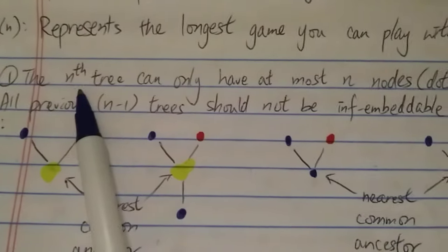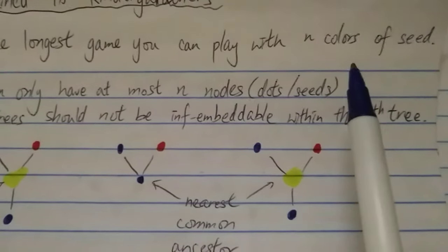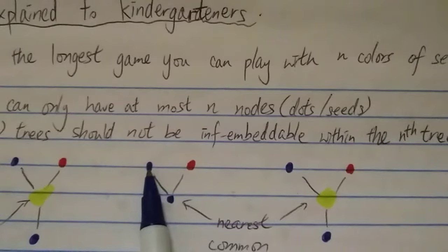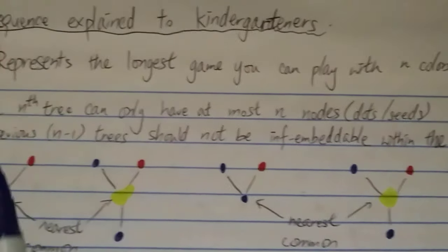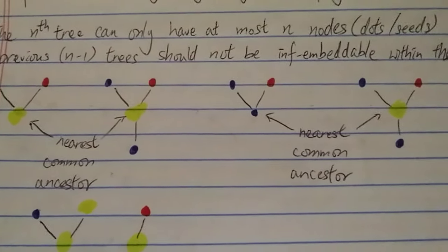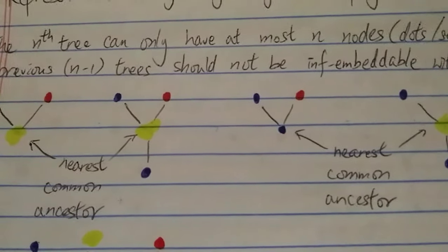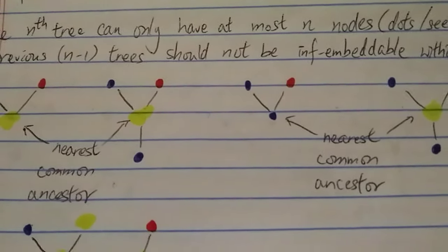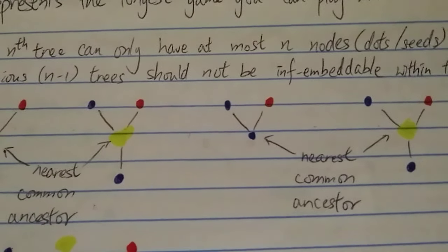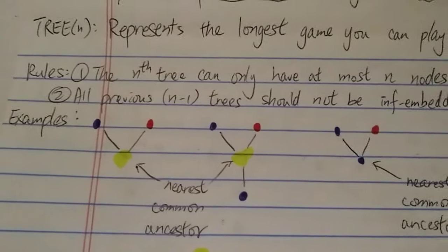The first rule is that the nth tree can only have at most n number of nodes. A node is basically a dot. So the first tree can only have one node, the second tree at most two nodes — either one or two but no more — and the third tree at most three nodes. That's the first rule.